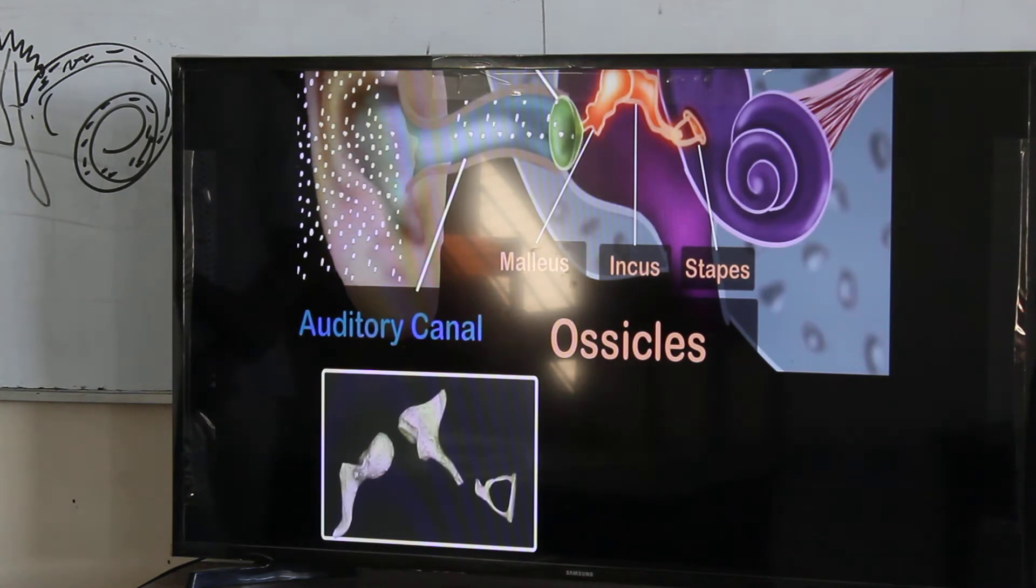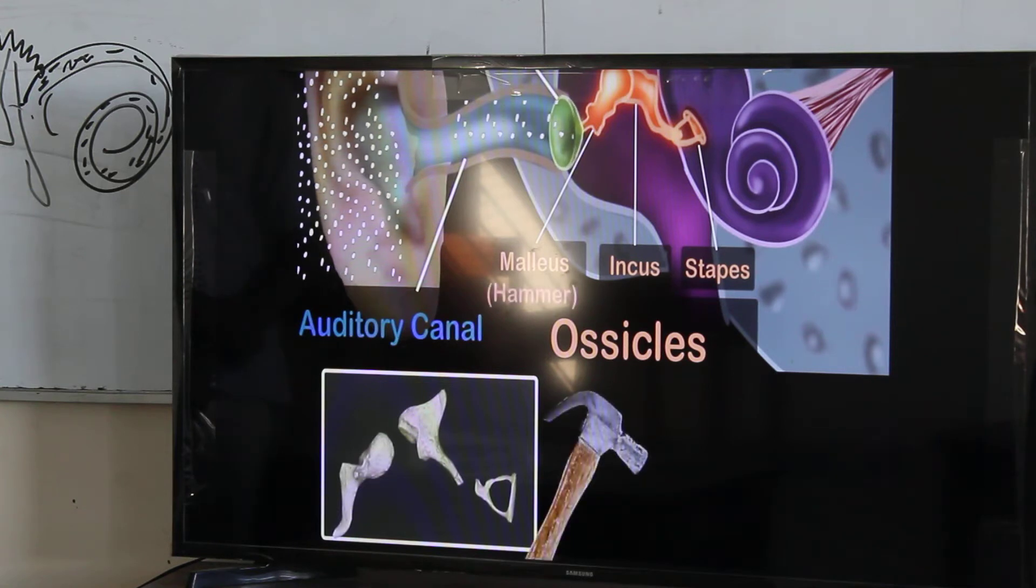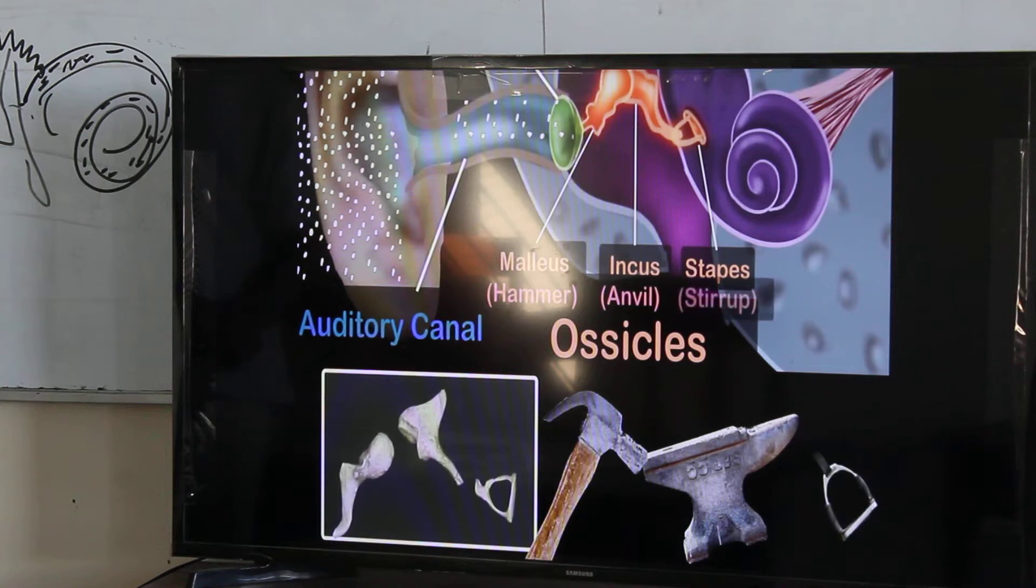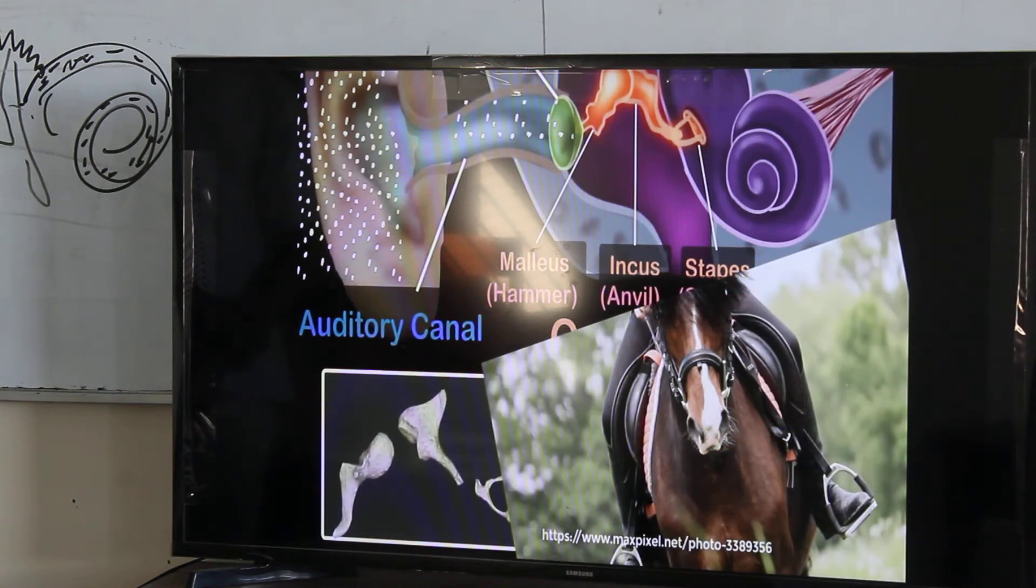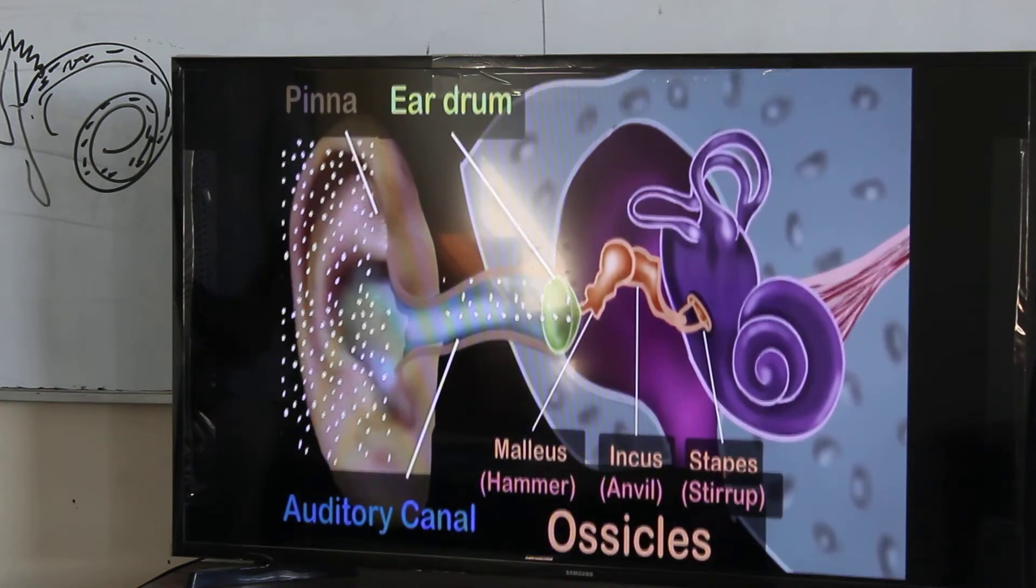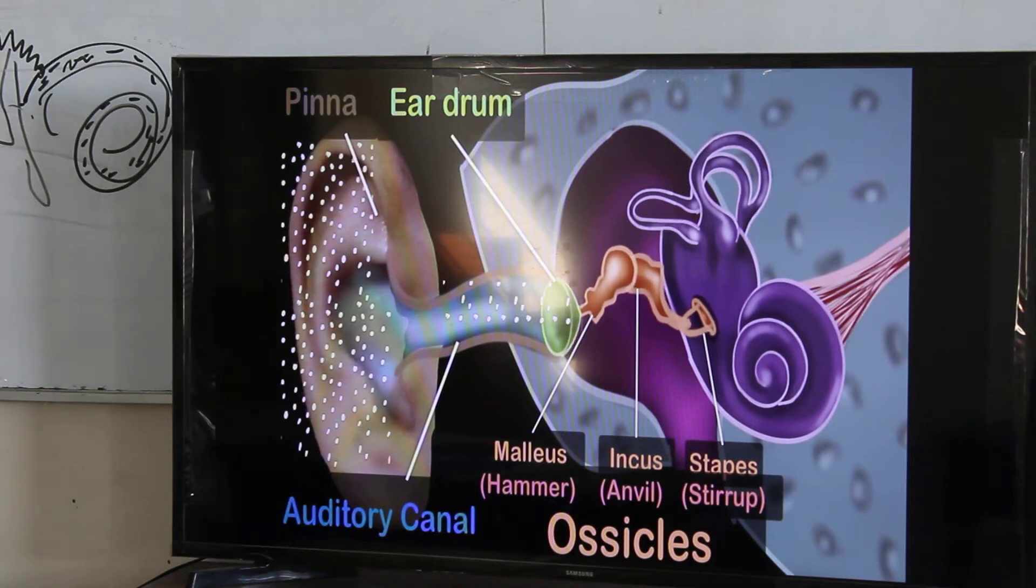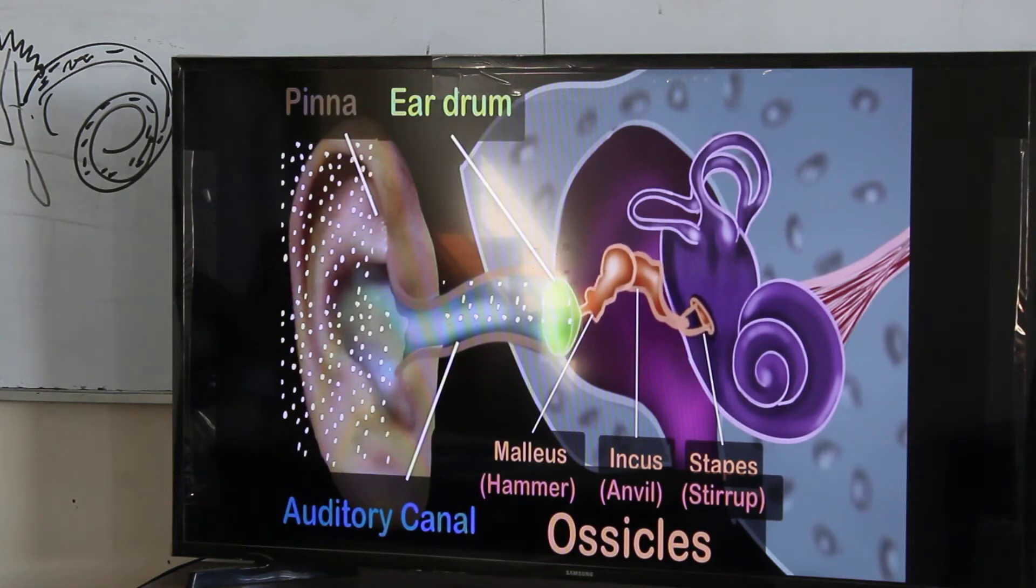And because of their shapes, they are also commonly called as the Hammer, the Anvil, and the Stirrup. Stirrup is where you rest your feet when you are riding your horse. Alright. So as the eardrum vibrates, you can see the ossicles also start vibrating, transferring the vibrations from the eardrums to the inner ear.